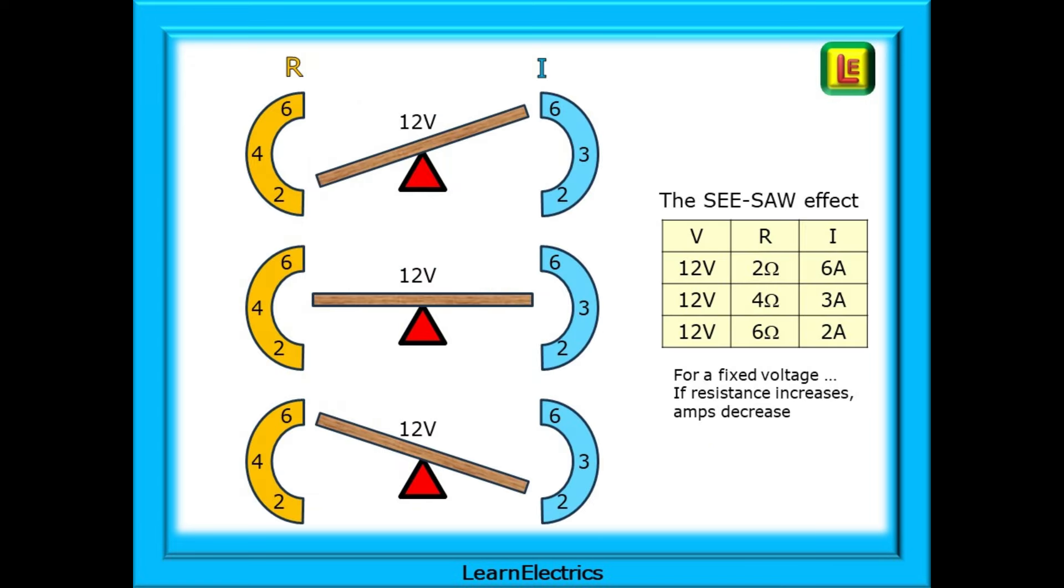Think of the ohms and amps relationship as being like a seesaw. For a certain voltage, if one side goes up, the other side must go down. When ohms go down, amps go up. Pause the video and take a moment to understand the numbers. Get to grips with this, and you will understand Ohm's law.